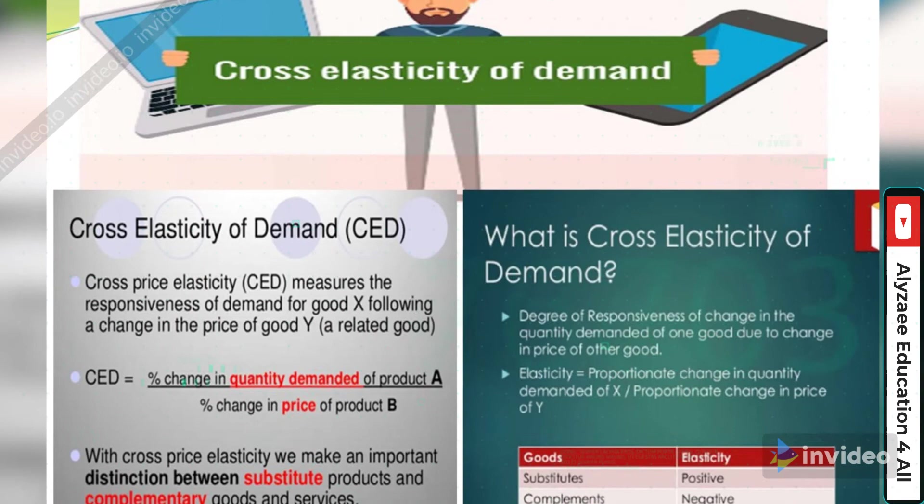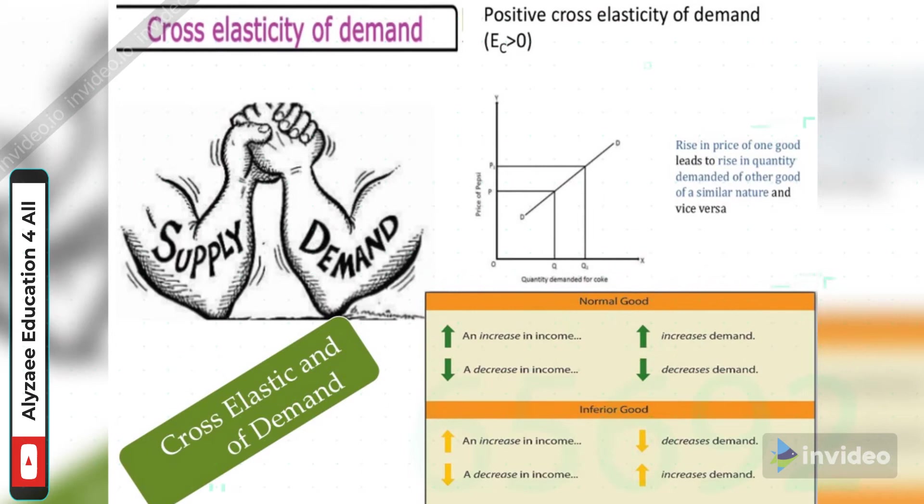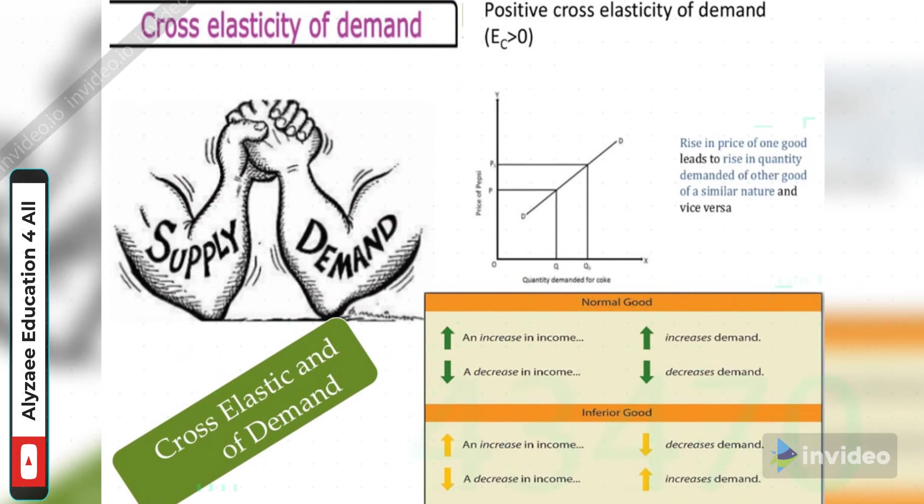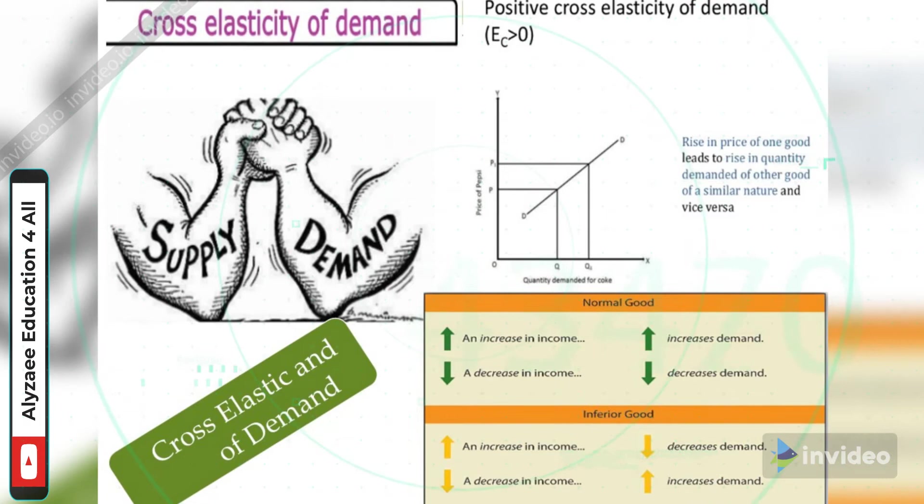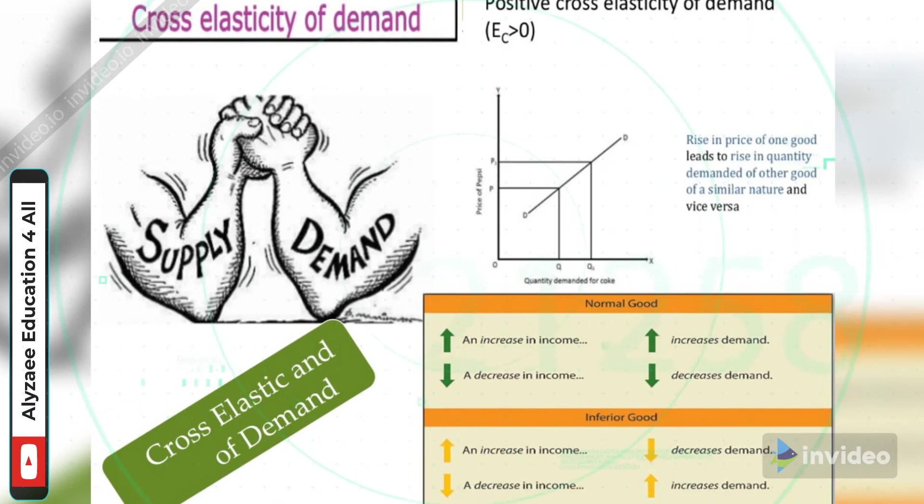So in cross elasticity of demand, the positive cross elasticity of demand is greater than zero. The rise in price of one good leads to the rise in the quantity demand of other of a similar nature and vice versa. So it means that in a similar nature of goods, as we have explained it in previous lectures as well, the Coke comparison goes with the Pepsi, like Surf comparison goes with the Ariel, or tea comparison going with the coffee.